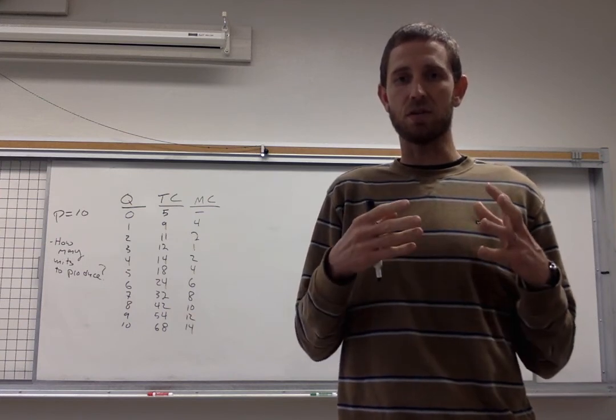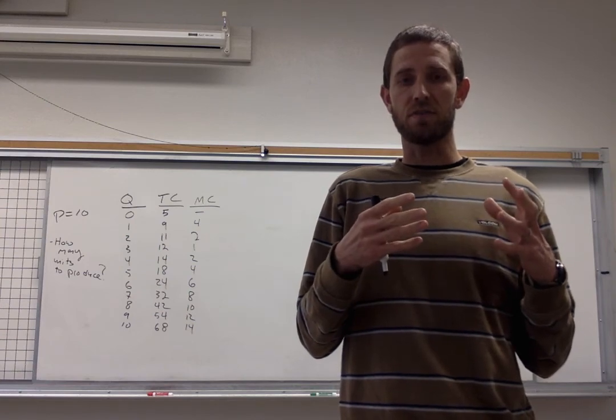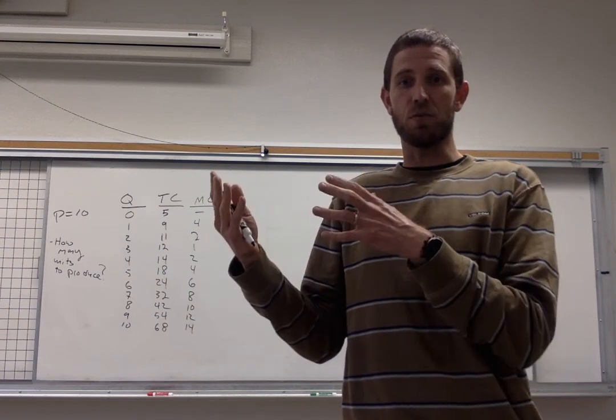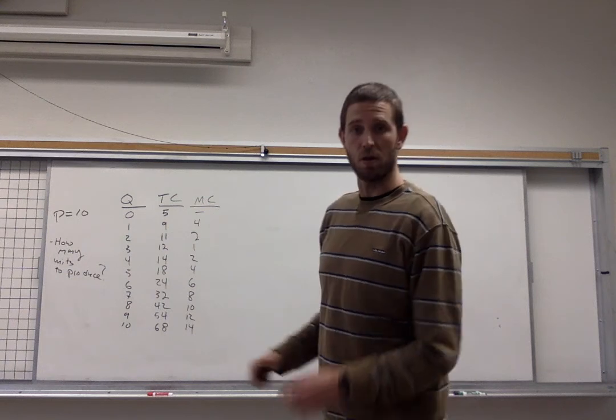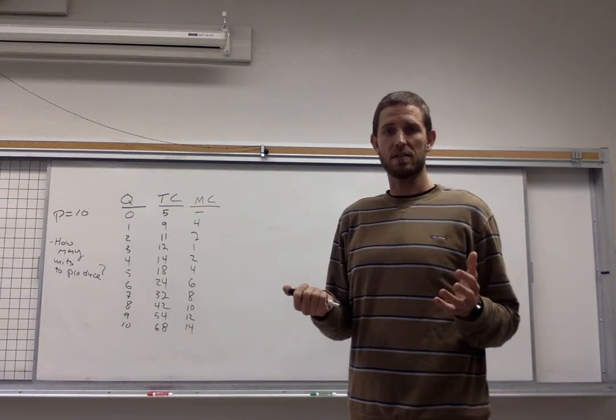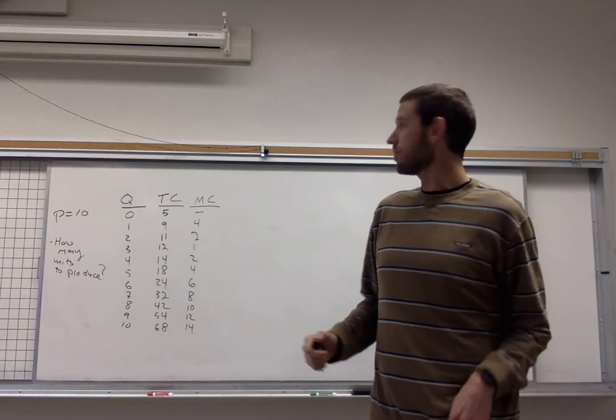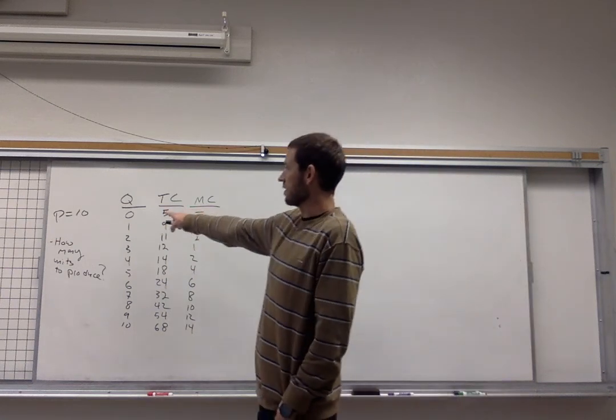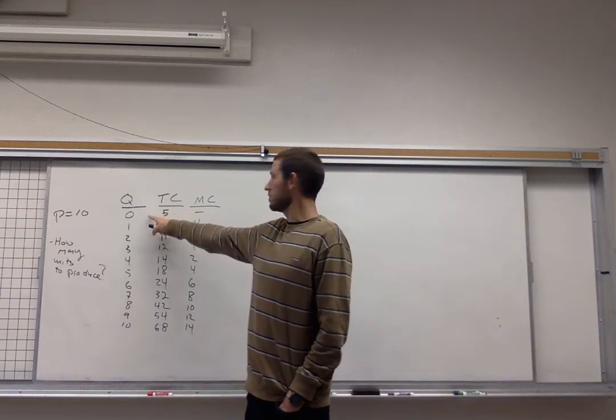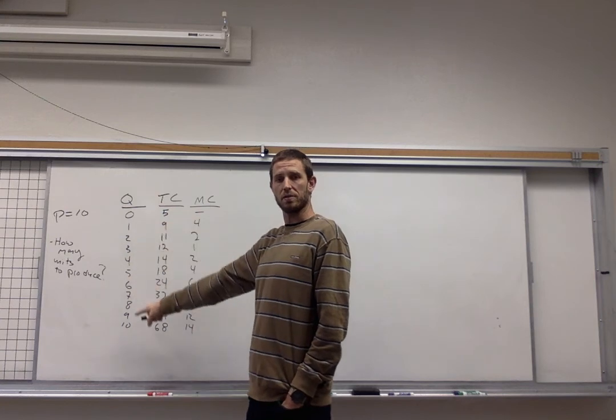Everybody's selling an identical good, so really for these firms it's a matter of deciding how much do you want to sell. I've got a table on the board here behind me that might represent some perfectly competitive firm. So in our table we have the quantities of the good that they might produce ranging from zero down to ten.